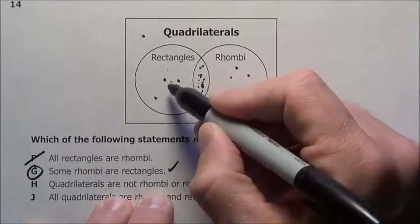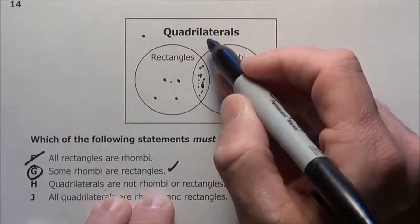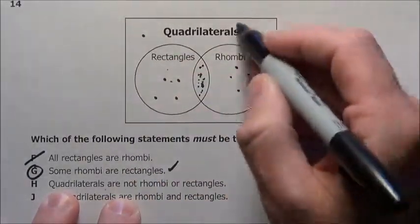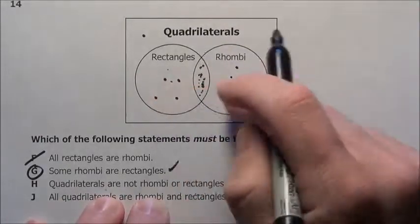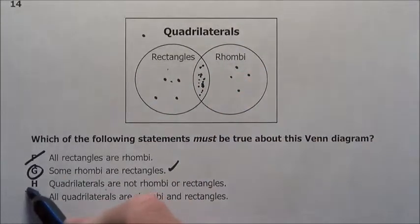These things in here are rectangles and they are types of quadrilaterals. And it is saying everybody in this square is not in this circle here or here. No, that's crazy. H is definitely out.